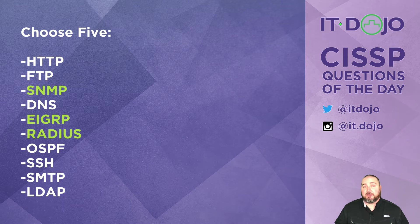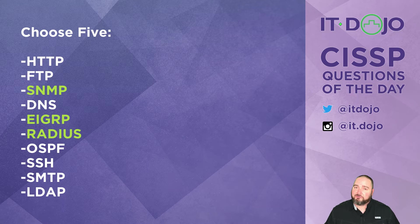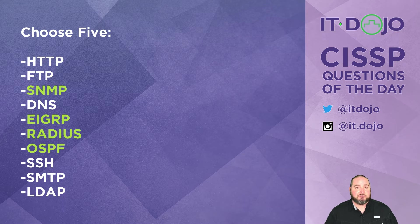Next is OSPF — Open Shortest Path First — another routing protocol just like EIGRP. It's an interior routing protocol, so it's not a protocol you're typically going to let go out to the internet. That's another correct answer.